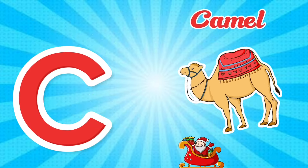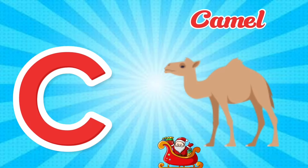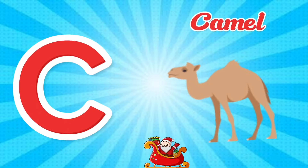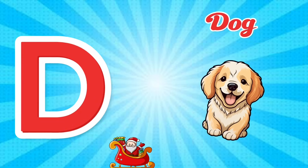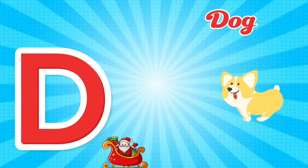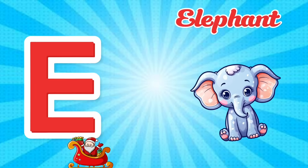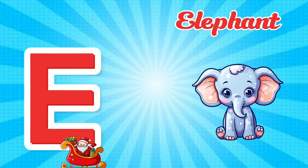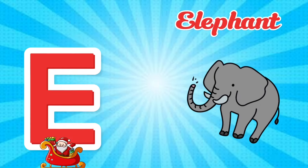C is for Camel. C, C. Camel, C is for Camel. C, C. D is for Dog. D, D. Dog, D is for Dog. D, D. E is for Elephant. E. Elephant, E is for Elephant. E, E.